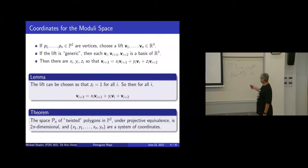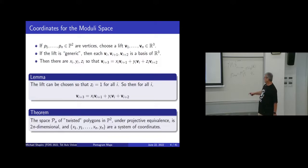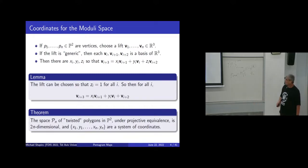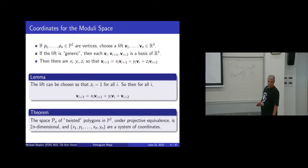This is called the space of twisted n-gons. We fix some n. If you consider the closed n-gon, that means this monodromy operator is just the identity. We want to study the dynamical properties of the pentagram map, and to do that we introduce coordinates on this space that are projectively invariant.